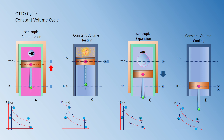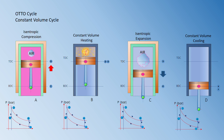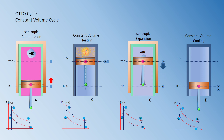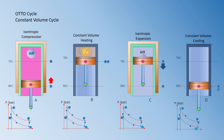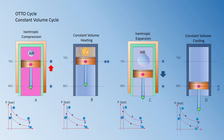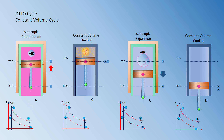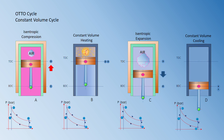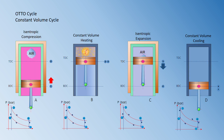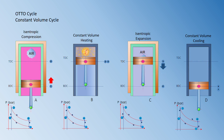During constant volume cooling, the piston remains at the bottom dead center — the lowest position it can reach. The volume is constant and heat is rejected from the air inside the cylinder. On the PV diagram, the full cycle moves from 1→2, 2→3, 3→4, and back to 4→1.